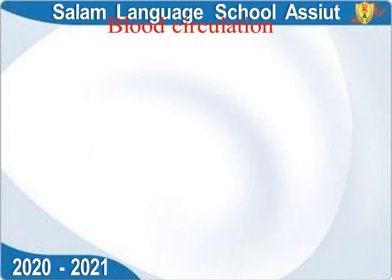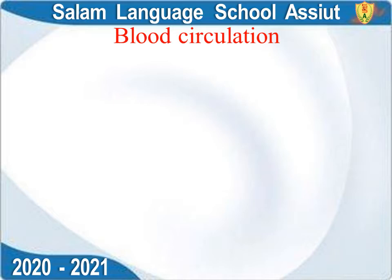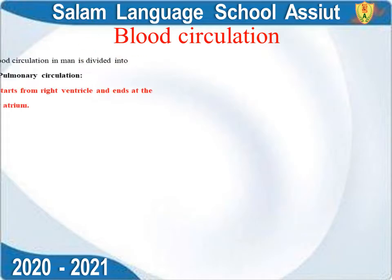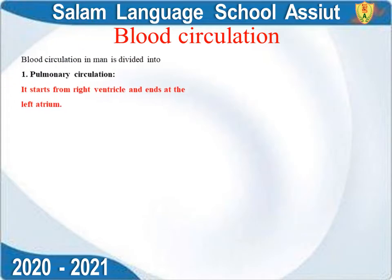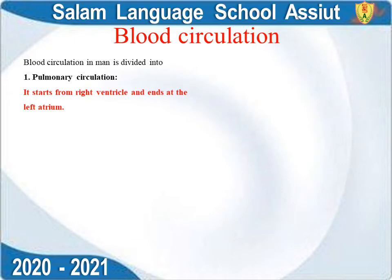Blood Circulation. We're going to take a look at the body's circulation systems: Pulmonary Circulation, Systemic Circulation, and Hepatic Portal Circulation.